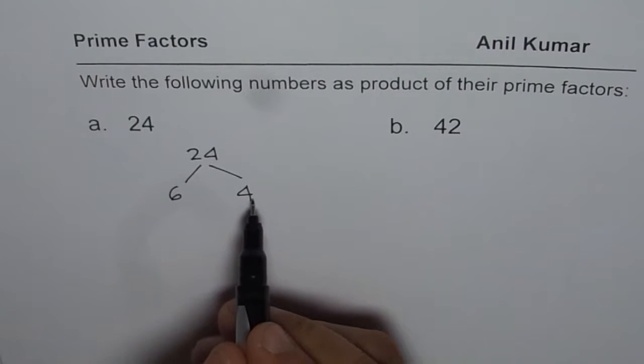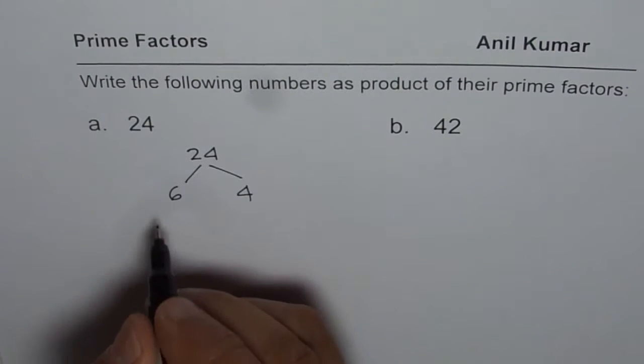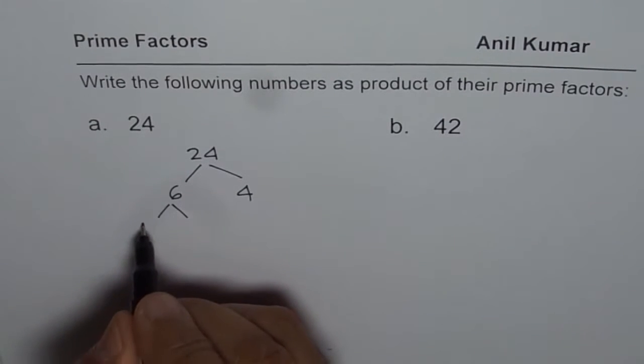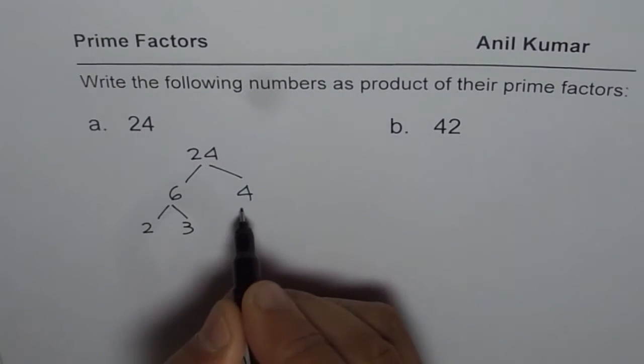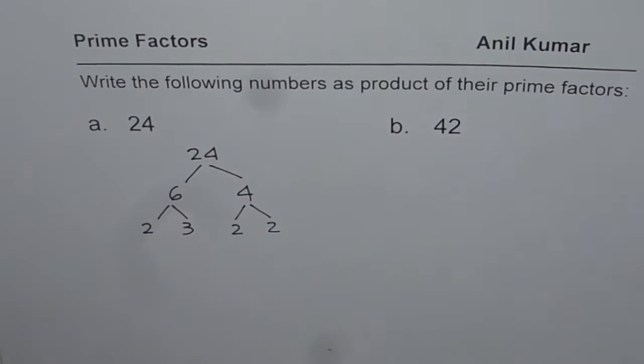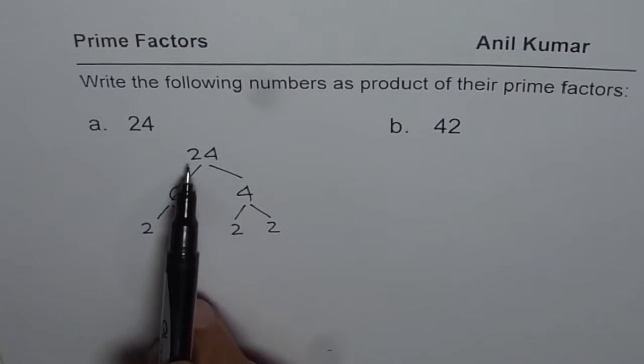Now 6 and 4 are not prime numbers. We can further write down 6 as product of 2 and 3. And 4 could be written as product of 2 and 2. So that becomes factors of 4. Now these are all prime numbers. So we have done the first step, and that is prime factorization of 24.